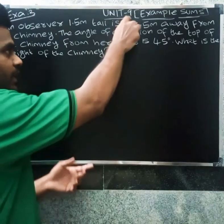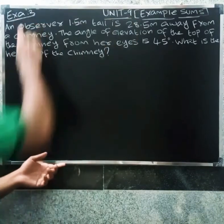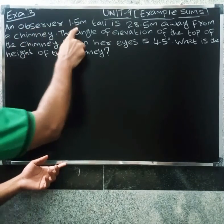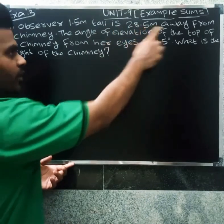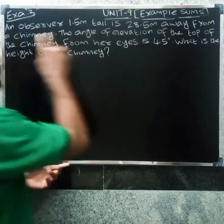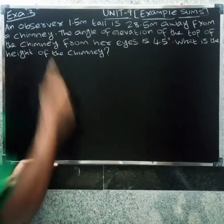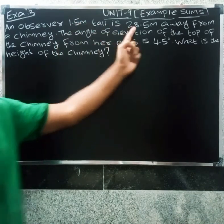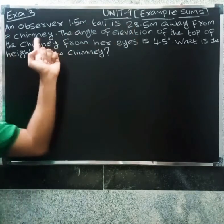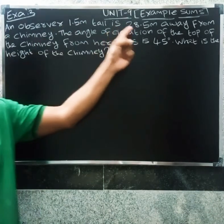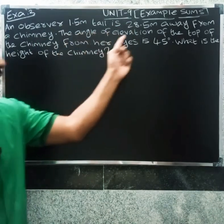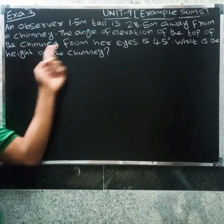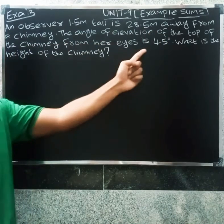Friends, I need our unit name. Example 3: An observer 1.5 meter tall is 28.5 meter away from a chimney. The angle of elevation of the top of a chimney from her eyes is 45 degrees.